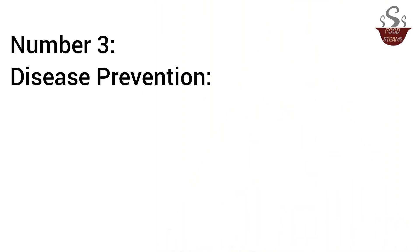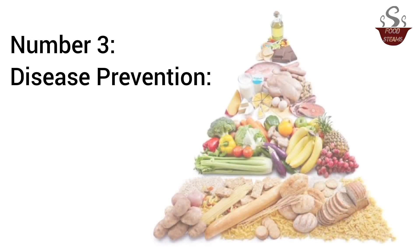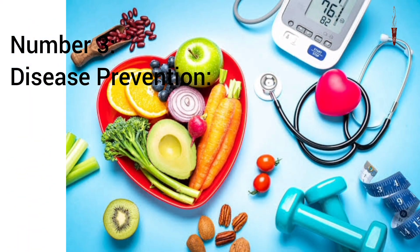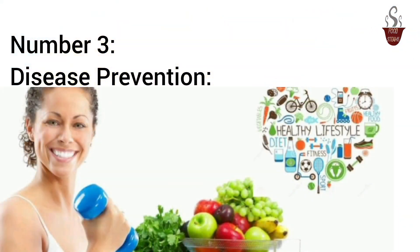Number 3: Disease Prevention. Following the food pyramid can contribute to reducing the risk of chronic diseases such as heart disease, diabetes, and certain cancers. A balanced diet supports overall health and strengthens the immune system.